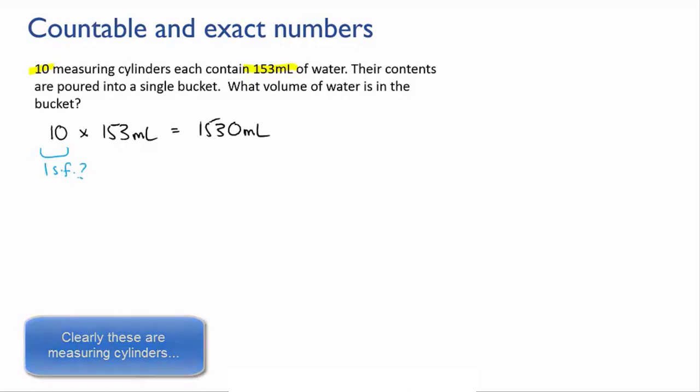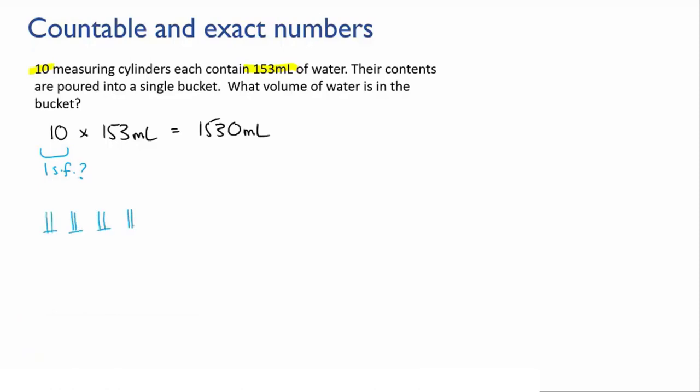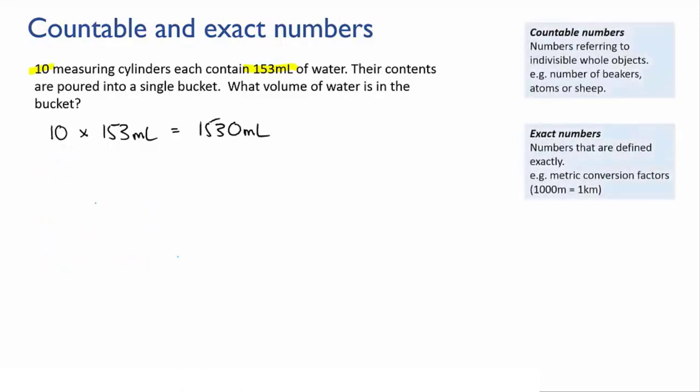But think about it. The 10 refers to the number of measuring cylinders. Is there any doubt about how many measuring cylinders there are? Do you think if you measured more carefully you might find that there was actually 10.1 measuring cylinders? No, of course not. The 10 figure here is what's known as a countable or an exact number.